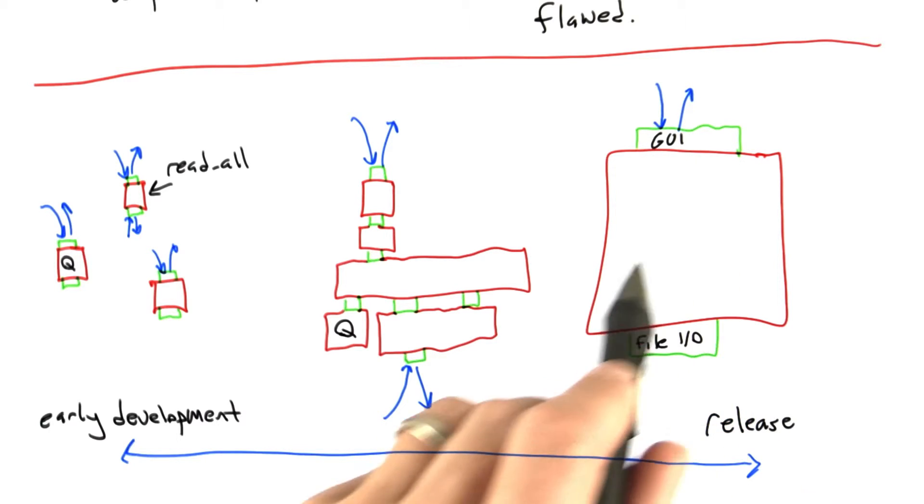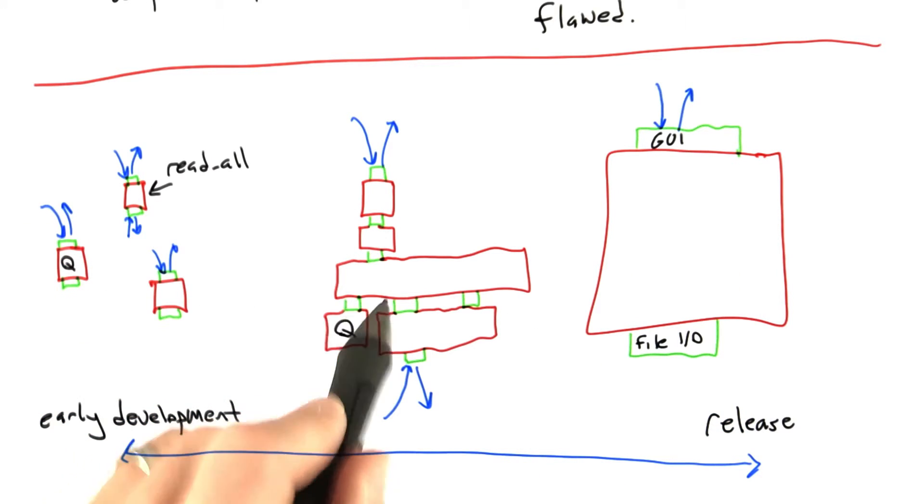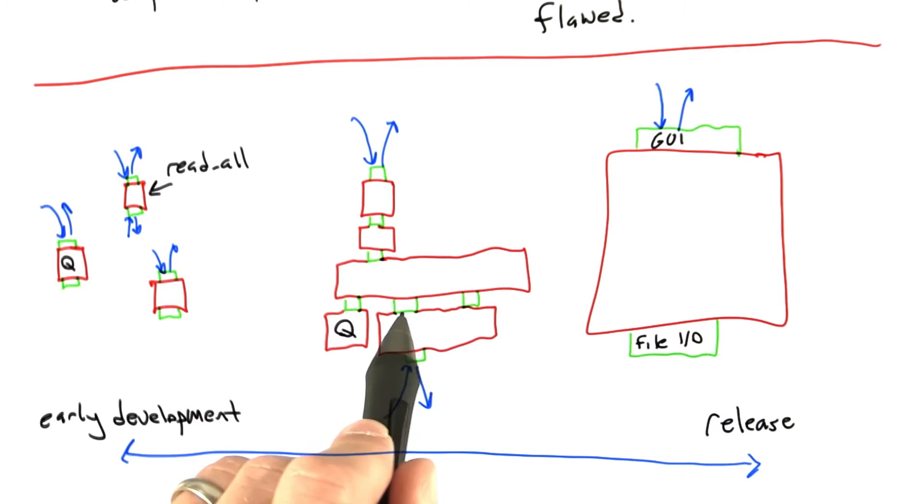Rather what we'd like to have done is have been doing random testing all along and using it to spot weaknesses in our software. The other thing that happens is as our software evolves to be more robust as we move towards releasing it, we're evolving our random tester to be stronger and stronger.